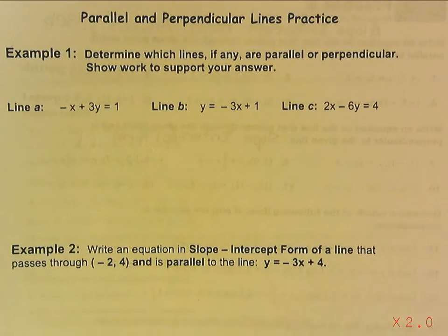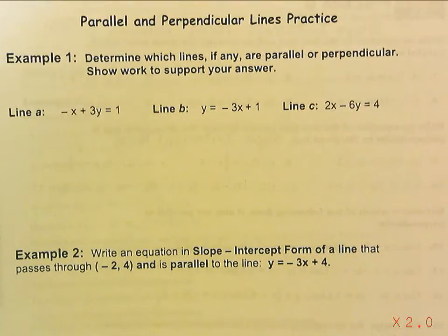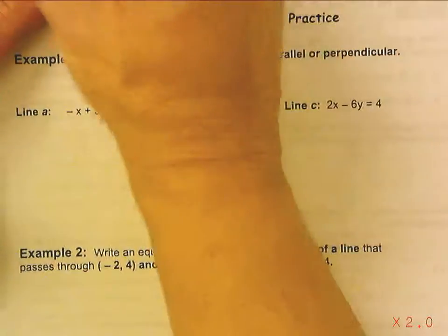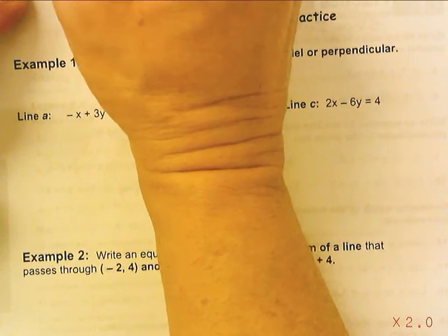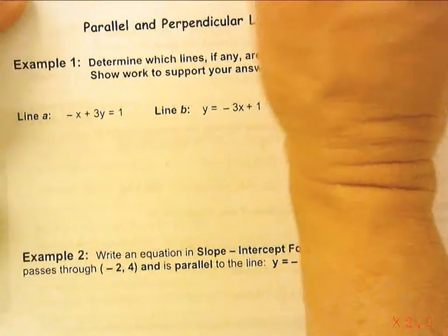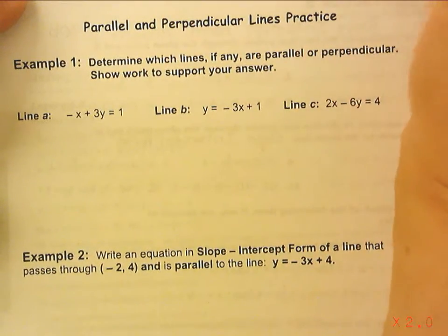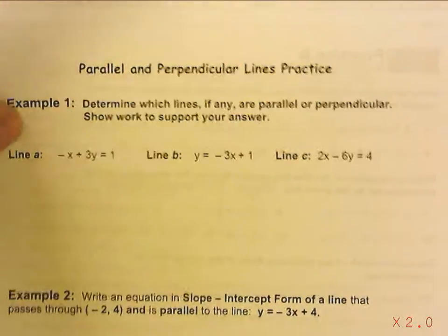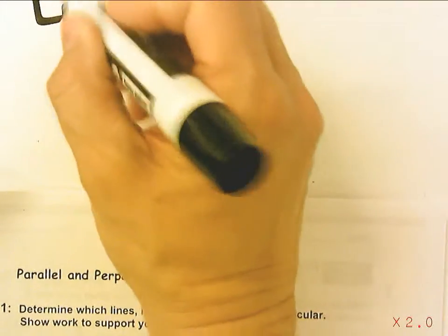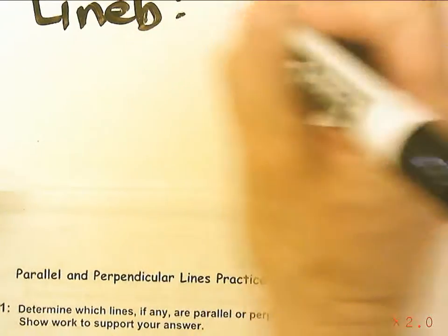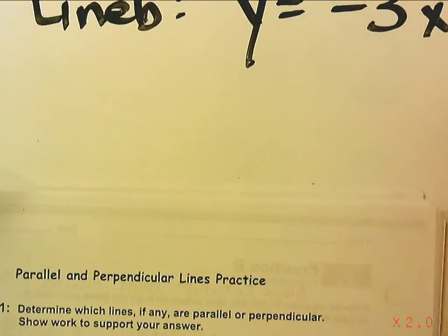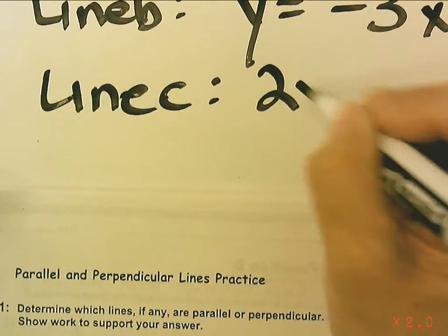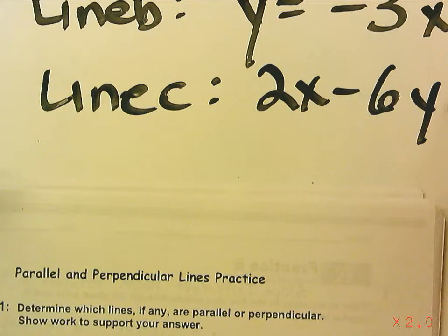And the question says, determine which lines, if any, are parallel or perpendicular. Line A is negative x plus 3y equals 1. Line B is y equals negative 3x plus 1. And line C is 2x minus 6y equals 4.